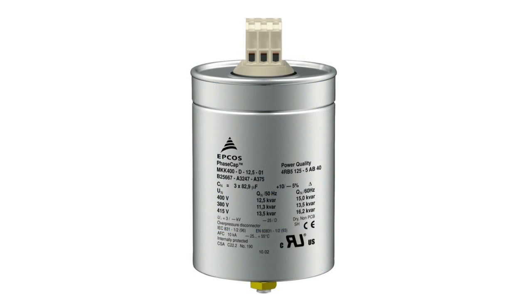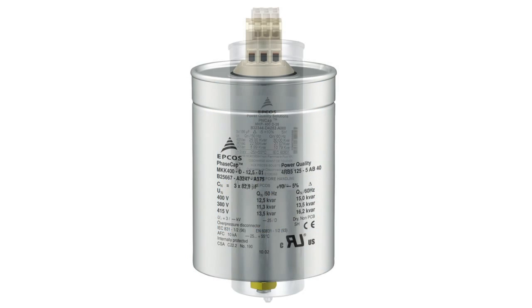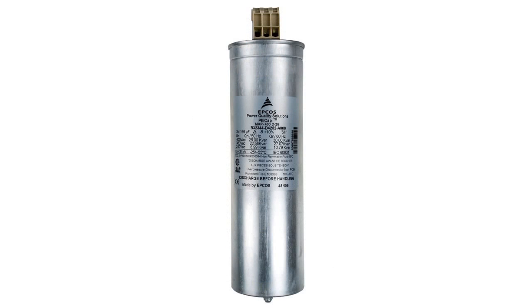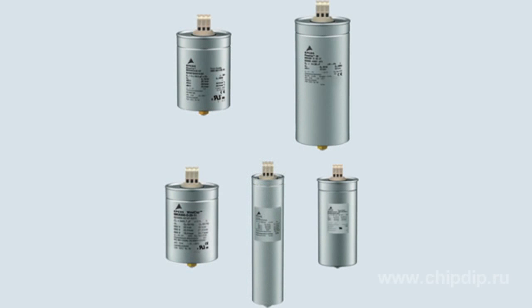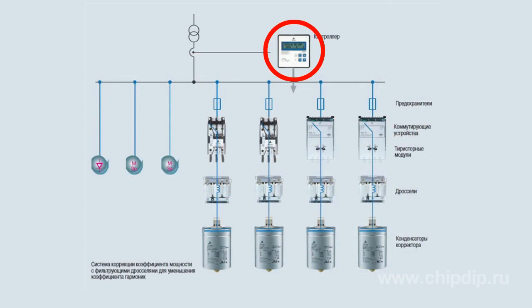Capacitors for power factor correction circuits must be able to sustain the high lift-off currents that occur in switching capacitors. The value of lift-off current can exceed the rated value by as much as 100 times. If the capacitors in the bank are connected in parallel, the lift-off currents become even higher, at times exceeding the rated value by 150 times. This happens because the lift-off current flows not only from the feed circuit, but from the capacitors connected in parallel as well.